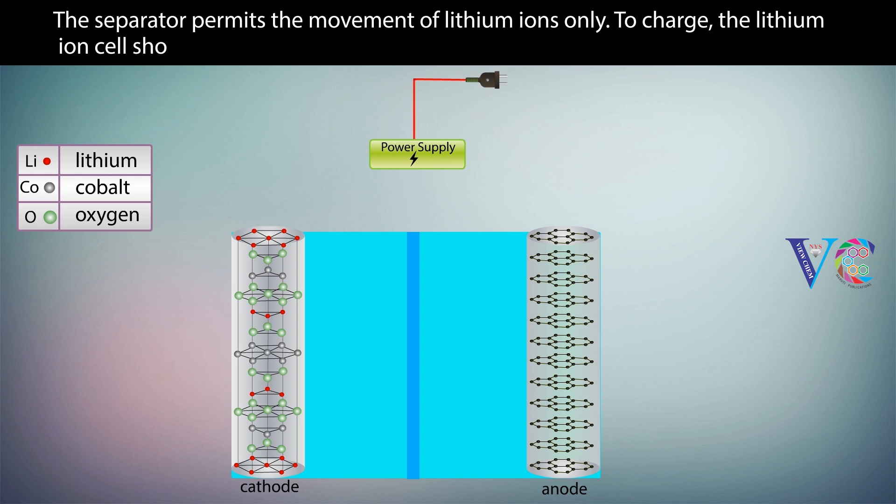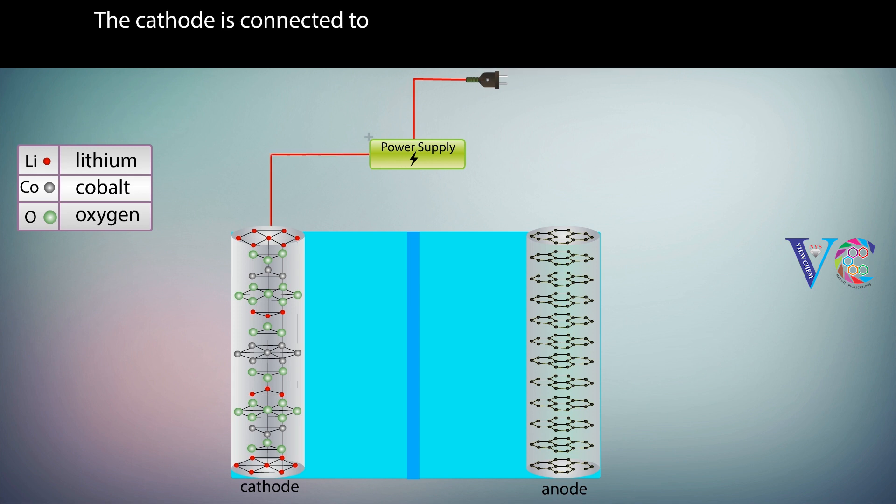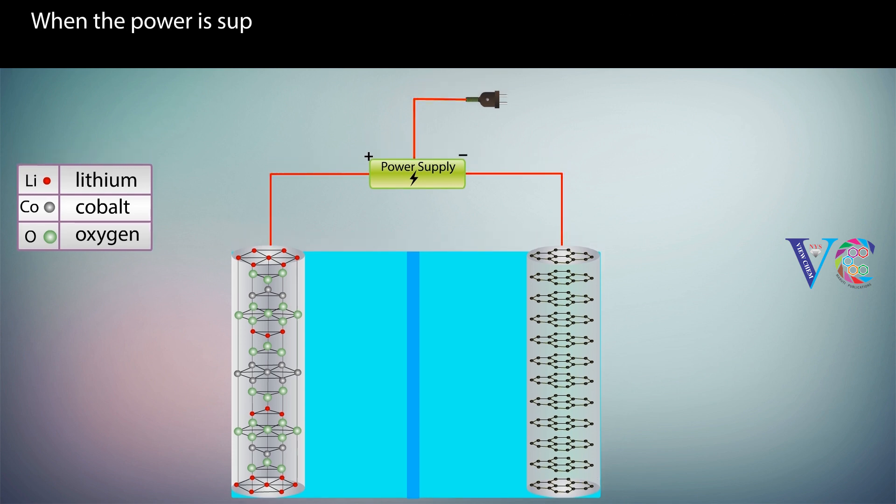To charge, the lithium ion cell should be connected to a power source. The cathode is connected to the positive terminal, while the anode to the negative terminal.